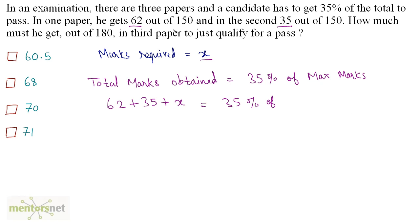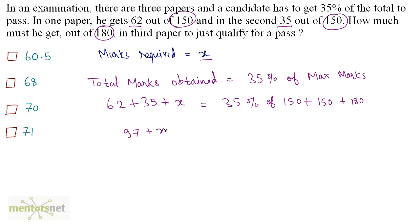What are the maximum marks? Well, 150, 150, and 180 are the maximum marks of the three papers respectively. So 150 plus 150 plus 180. Now this is quite easy: 62 plus 35 is equal to 97. So 97 plus x is equal to 35 upon 100 times 480.